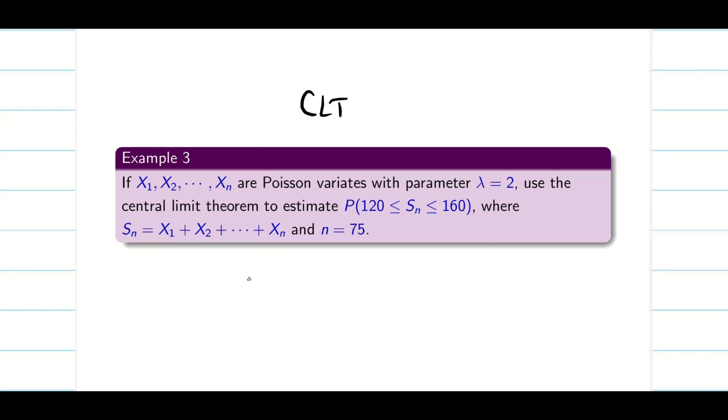All are Poisson variates. Whenever they say Poisson, immediately we remember lambda equals np, that equals my mean, that equals my variance. Here it is given as 2. According to our problem, Central Limit Theorem, mu is mean, that's going to be 2. Sigma squared is my variance, that's also going to be 2. So sigma is going to be positive square root of 2. Everything is done. Now I know my sigma, mu, as well as lambda.